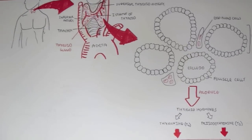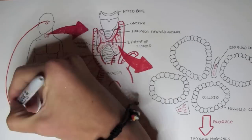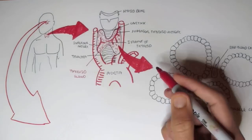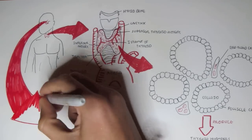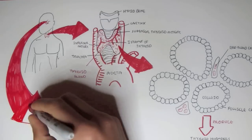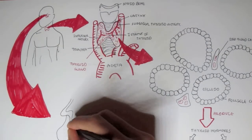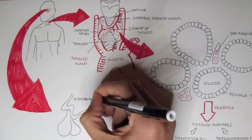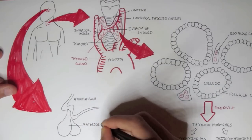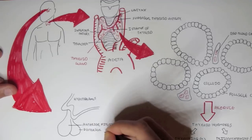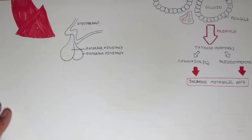What helps regulate or stimulate the production of these two hormones? In the endocrine system, the hypothalamus has a major role in stimulating glands. The hypothalamus is situated around the brain. If we zoom into this section we can see the hypothalamus and two lobes underneath it known as the anterior and posterior pituitary glands. Of course, the thyroid gland is situated around the throat.